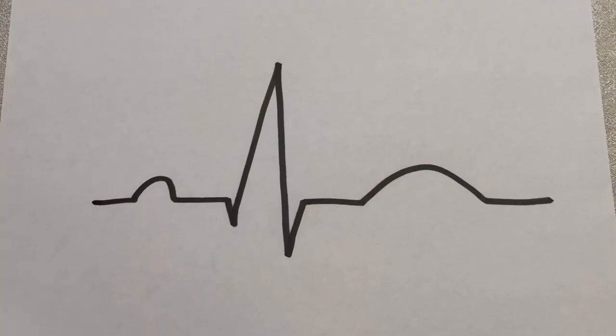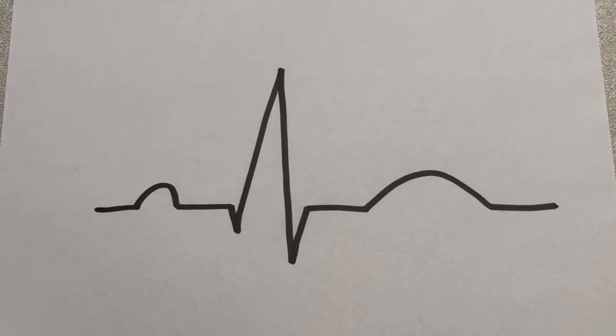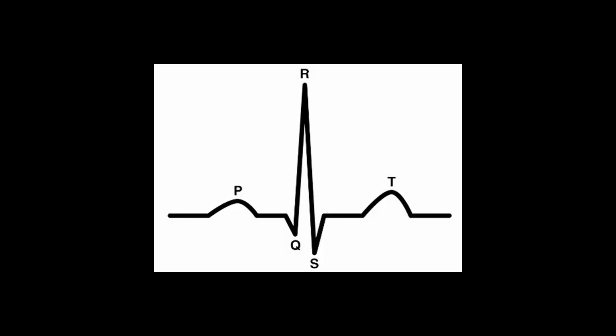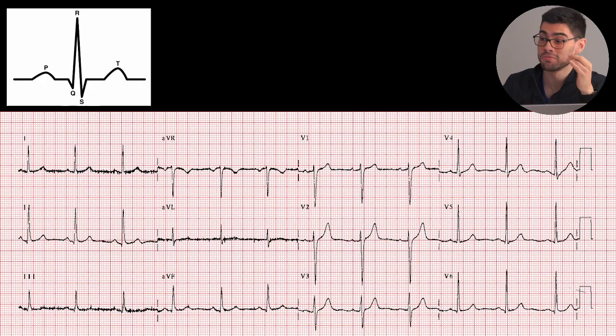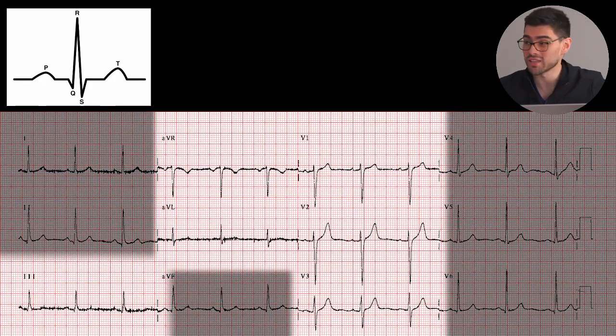Let's see. That's what I thought. The problem with learning EKGs is that most of us, when we were learning about EKGs, we had a class and our professors just showed us a slide with a typical P, QRS, and T wave. So we saw that and we thought, okay, that's how a normal EKG is supposed to look like. And then we started learning all sorts of pathologies. But that's not really how an EKG looks like.